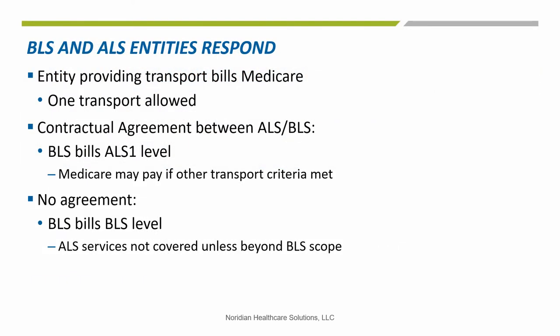Medicare does not regulate the compensation between the BLS entity and the ALS entity. If there is no agreement between the BLS ambulance supplier and the ALS entity furnishing the service, then only the BLS level of payment can be made. In this situation, the ALS entity services are not covered and the beneficiary is liable for the expense of the ALS service.